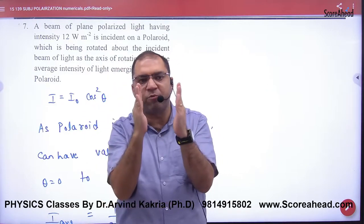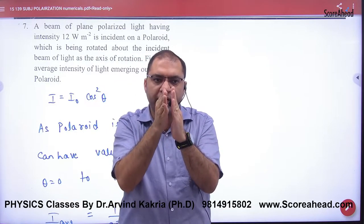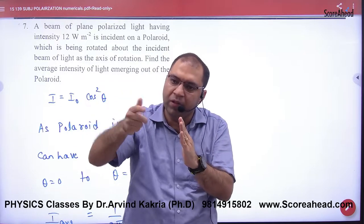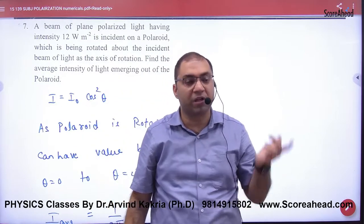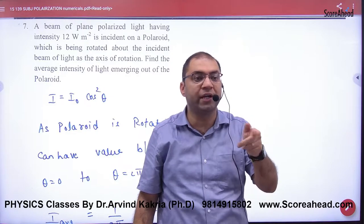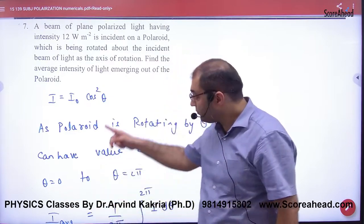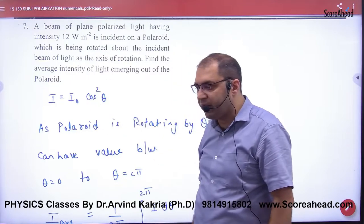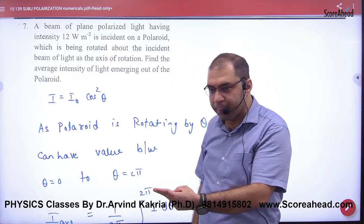So in the first and the second Polaroid, the angle will be 0 degrees, 10 degrees, 20, 30, 40, up to 360. So we consider all the angles. When all angles are considered, then the average value of cos² θ is taken. And the average value of cos² θ is 1/2. So what will the intensity be? I₀/2.